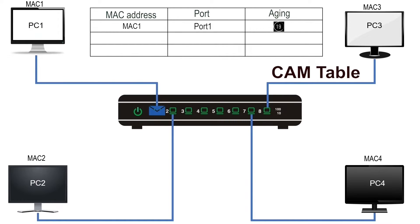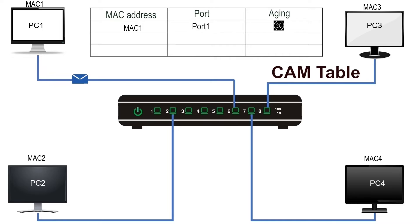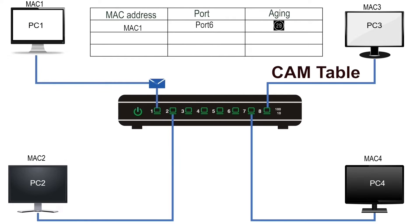When a switch receives a frame, it finds the frame's source address in the CAM table. If an entry exists, it resets the timer in the aging field. If no entry exists, it adds a new one. There is one more scenario: if the switch finds an entry for the source MAC address with different port information, it assumes the device has been relocated and updates the port information along with the timer. For example, if PC1 moves from port 1 to port 6, the switch updates the CAM table entry accordingly. This feature makes device relocation completely hassle-free.